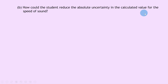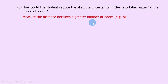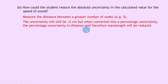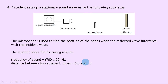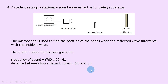Part b asks how the student could reduce the absolute uncertainty in the speed of sound. They could measure the distance across a greater number of nodes — for example five rather than two. The reading uncertainty would remain ±2 centimeters, but the measured distance would be larger, say 50 centimeters instead of 25 centimeters. The percentage uncertainty in distance would then be 2 divided by 50 times 100 rather than 2 divided by 25 times 100, giving a much smaller percentage uncertainty and therefore a smaller absolute uncertainty in the speed.